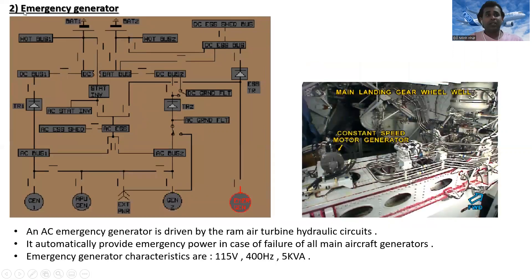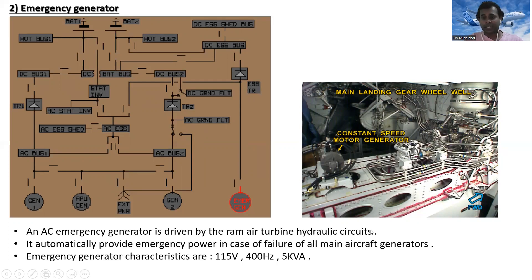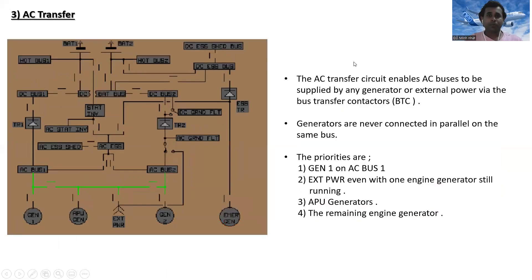The second main topic is the emergency generator. The emergency generator is located near the main landing gear wheel bay. An AC emergency generator is driven by the ram air turbine hydraulic circuit. It automatically provides emergency power in case of failure of all main aircraft generators. Emergency generator characteristics are 115 volts, 400 hertz, and 5 kilowatt amperes.